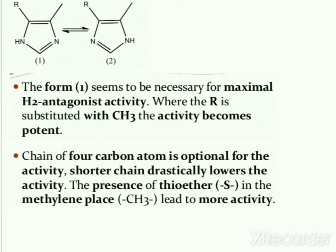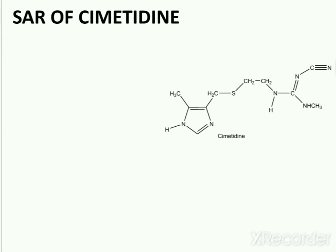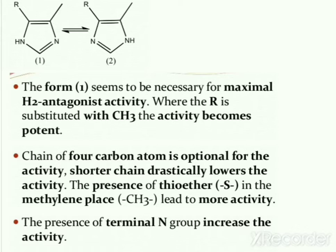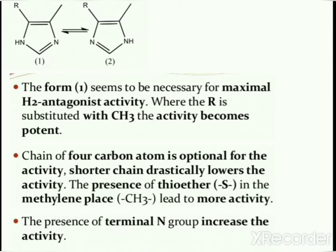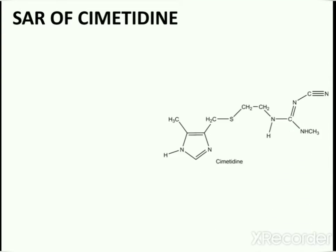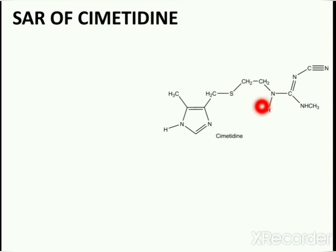Other structural features include a chain of four carbon atoms, which is optimal for activity — shorter chains drastically lower the activity. In cimetidine, there is a chain length of four carbon atoms between the heterocyclic ring system and the terminal nitrogen. The presence of a thioether in the methylene position leads to more activity, and the presence of the terminal N group also increases activity.